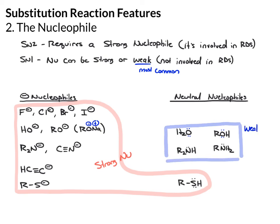That's a good generalization. If you see one of these strong nucleophiles, most likely it's going to be an SN2, but it could be an SN1. If you see a weak nucleophile, SN1 is your only option — these can't do SN2 reactions.